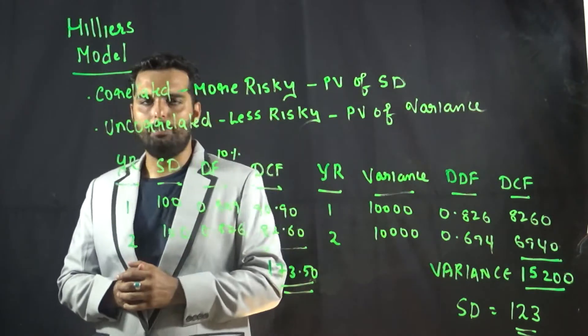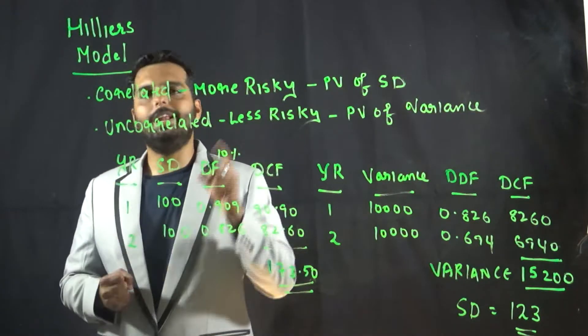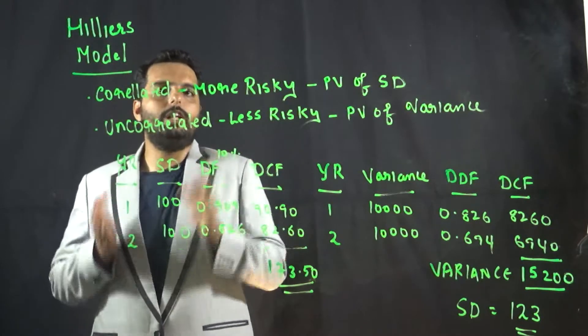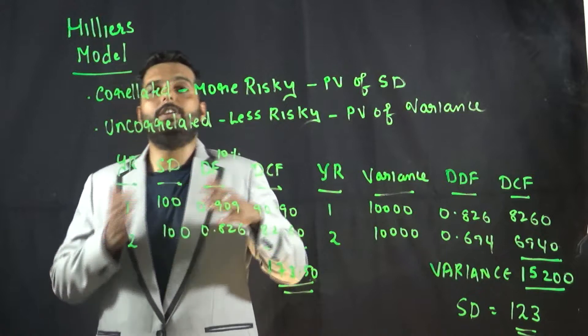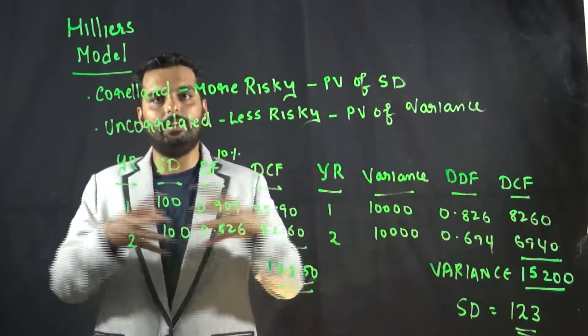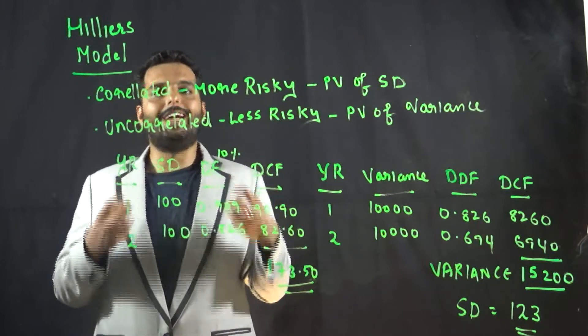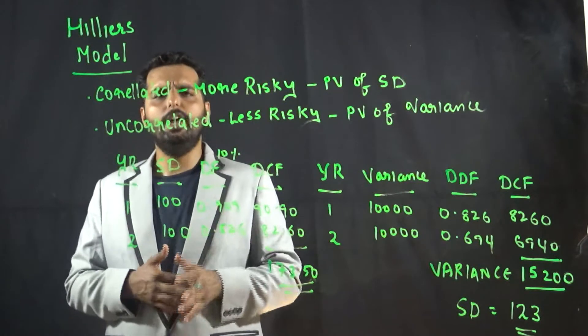Hillier came up with this model mainly for one challenge. Let's say for year one we are having one standard deviation, year two we are having another standard deviation. I want to find out the combined standard deviation of two years. That is one reason why we go for Hillier's model.